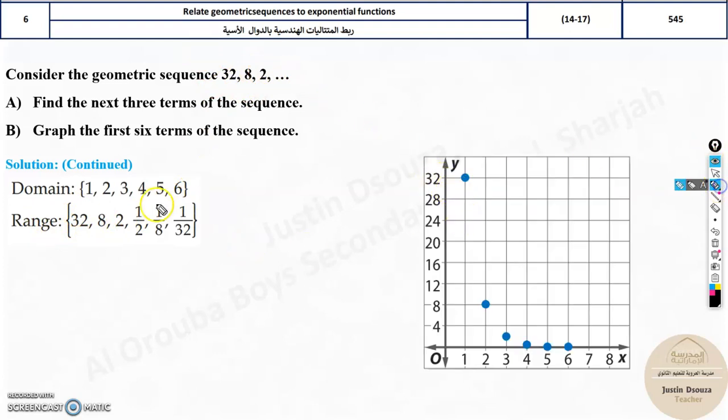Now when you graph them, look over here. Remember, this was a huge value, 32 at 1. But then it drops down because you're multiplying by a quarter, 8. And then it's down, down. And this gives you an exponential function look, a graph. So that's it. So this is how we solve it.